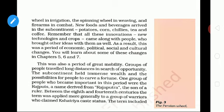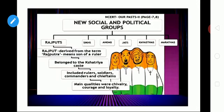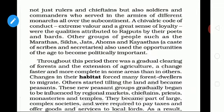The period became very wealthy. One particular group of people became important during this period — they were called Rajputs. The name is derived from Rajputra, meaning the son of a ruler, and they belonged to the Kshatriya caste. The term Kshatriya included not only rulers and chieftains but also soldiers and commanders who served in armies. Their main qualities were chivalry, courage, and loyalty. Other political groups that emerged included Marathas, Sikhs, Jatis, Ahoms, and Kayasthas — a caste of scribes and secretaries.